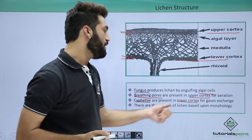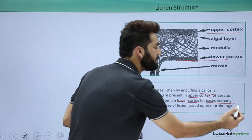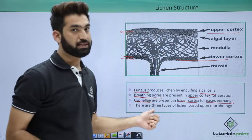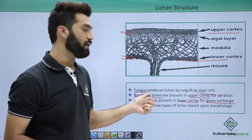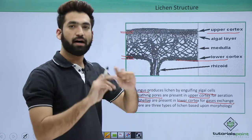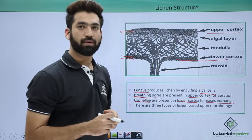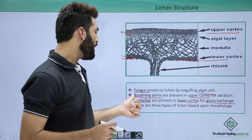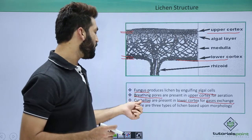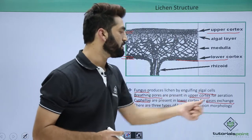Cyphale in the lower cortex help with gaseous exchange. So remember these two structures: breathing pores in the upper cortex are for aeration, and cyphale in the lower cortex are responsible for gaseous exchange.